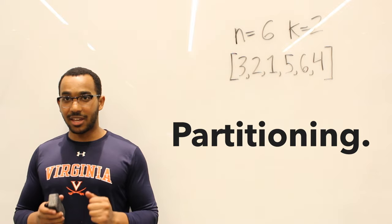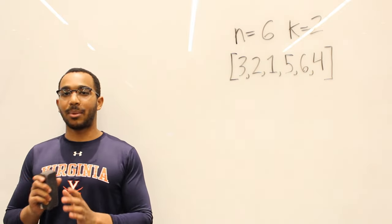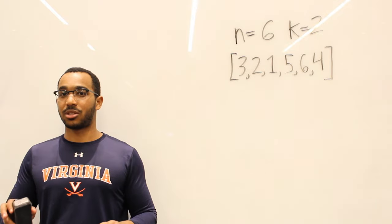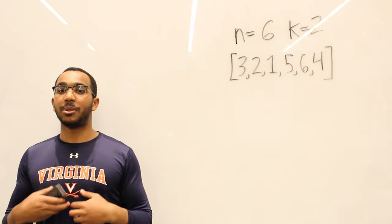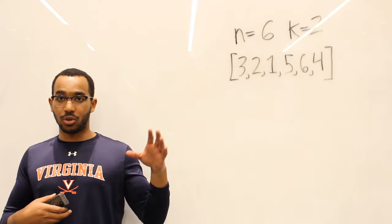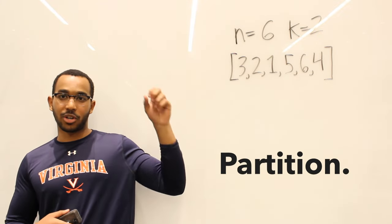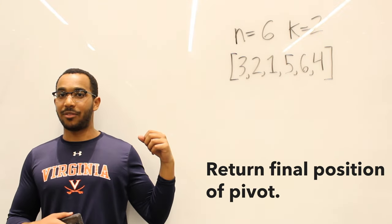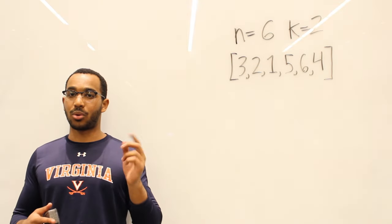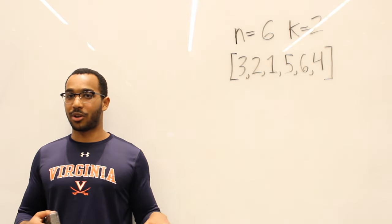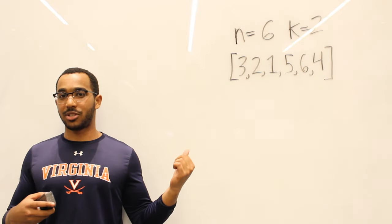What we really need to do is something we already know how to do — covered in our quicksort video. The key to solving this in linear time comes down to partitioning. Partitioning is the key thing from quicksort that we need to pull here. I'd highly recommend watching the quicksort video first, because this will be confusing unless you deeply internalize what it means to find a pivot, partition around it, and return the index of that pivot.